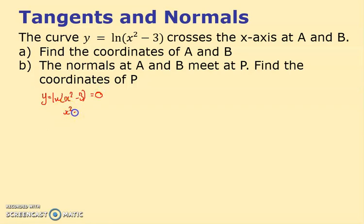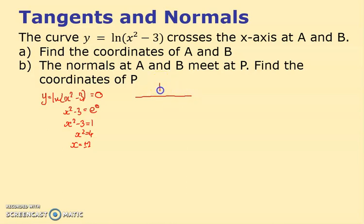So I've got two points: A at (-2, 0) and B at (2, 0). It wants the normals. To get normals you first find the tangents, so find dy/dx. To differentiate log(x² - 3) we use the chain rule: recall that if y = ln(x) then dy/dx = 1/x.